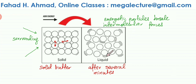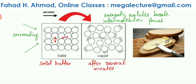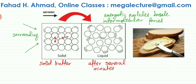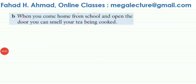Once the energetic particles overcome the intermolecular forces, it's much easier to move them around. You can apply pressure with a knife and spread the butter. When the butter was very cold, the intermolecular forces were still in place, the particles were strongly holding each other together, making it much more difficult to spread.